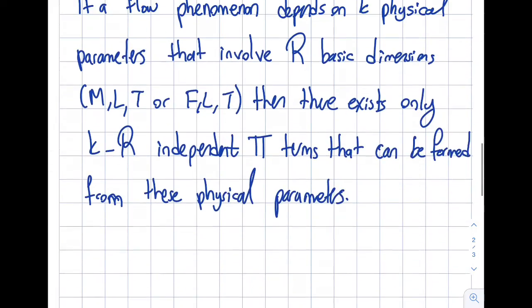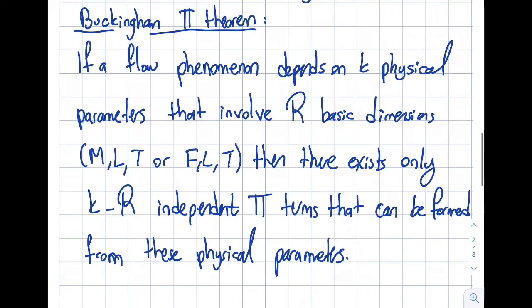If I go down here, that involves r basic dimensions. As we discussed in the general dimensions section we have MLT or FLT. So that r is equal to 3 in this particular case. So then there exists 5 minus 3 is equal to 2 independent pi terms that can be formed from these physical parameters.